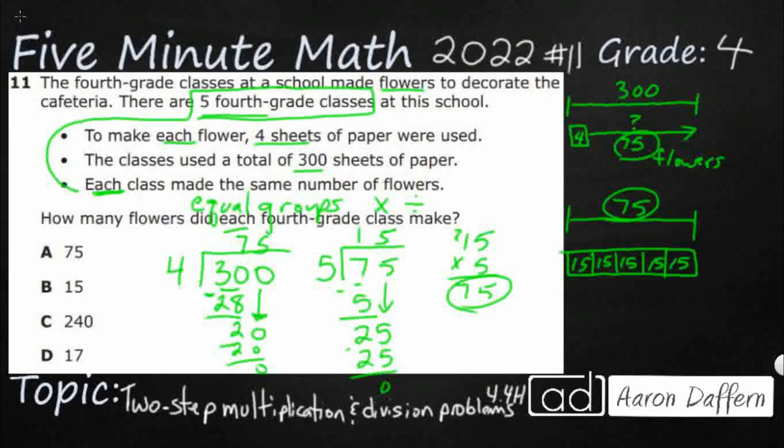Each flower takes four sheets. It says that right there. So each flower takes four sheets. So that's going to be 20, 28, 30. Yeah, there's my 300 sheets right there. So I double checked my work. And so how many flowers did each fourth grade class make? Well, they made 15 flowers each. My answer is B.